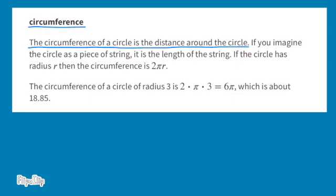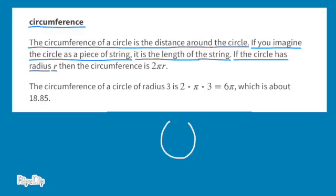Circumference. The circumference of a circle is the distance around the circle. If you imagine the circle as a piece of string, it is the length of the string. If the circle has a radius r, then the circumference is 2 times pi times r.